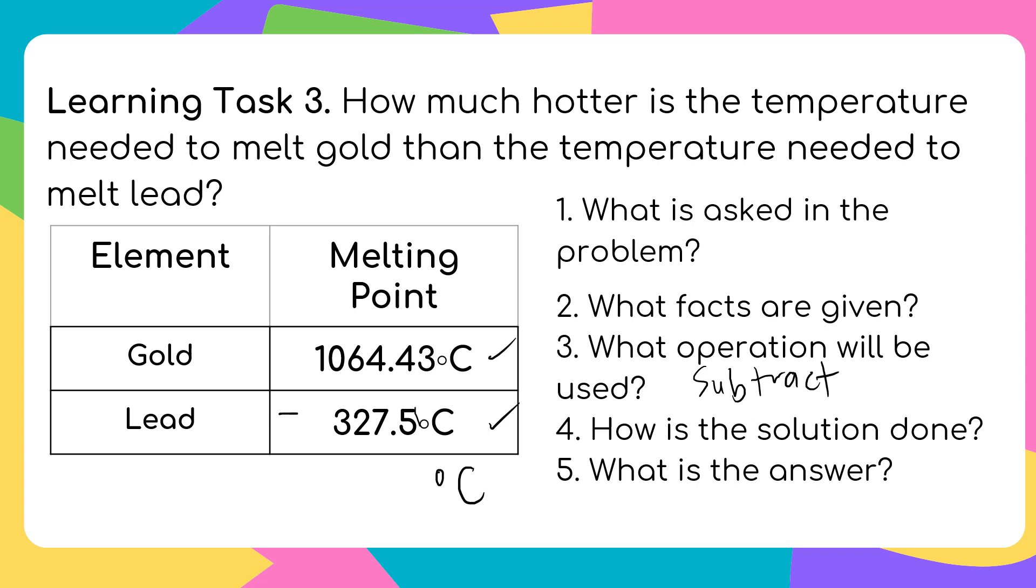3 minus, pwede natin yan yan 0, 3 minus 0 is 3. 4 minus 5 cannot be, so borrow 1 from 4. 4 will become 3, 4 will become 14. 14 minus 5 equals 9. Then decimal point. 3 minus 7 cannot be, so borrow 1 from 6. 6 will become 5, then 3 will become 13. 13 minus 7 equals 6. Then 5 minus 2 equals 3. Then 0 minus 3 cannot be, so borrow 1 from 1, naging 10. Minus 3 equals 7. What is the answer? 736.93 degrees Celsius. Ito yung difference. Gaano? Mataas yung melting point ng gold sa lead.